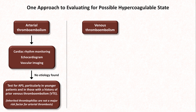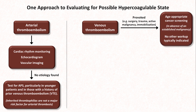For a venous thromboembolism such as a DVT or PE, the first question to ask is whether or not the clot was provoked. If provoked — for example by surgery, trauma, active malignancy, or immobilization — the only workup that is typically indicated is age-appropriate cancer screening, which patients should get anyway irrespective of the presence of a clot. A major reason to not test for thrombophilias after provoked VTEs is that patients who test positive for one may not be at a significantly increased risk of recurrent VTE compared to those who test negative. So while these would not be false positives per se, a positive test result could nevertheless expose the patient to unnecessarily long durations of anticoagulant therapy.